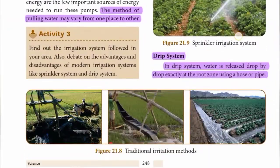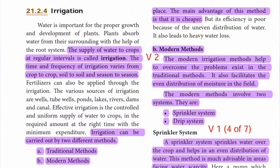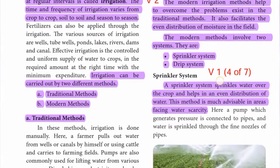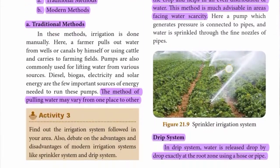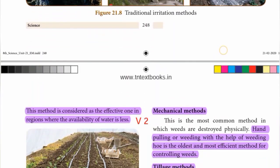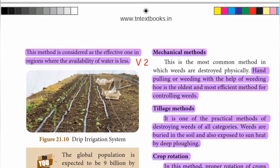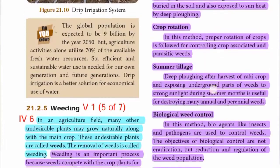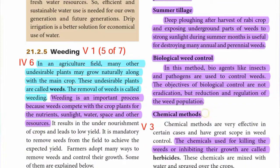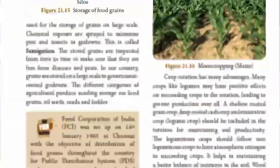Page 248 — highlight the sprinkler system and drip system sections. Roman number five, second detail answer is complete. Moving to question number three.